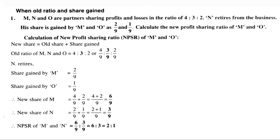The problem: M, N, and O are partners sharing profit and loss in the ratio of 4:3:2. In this problem, N is retiring from the business. When N gets retired, the remaining partners are M and O. M and O have gained shares of 2/9 and 1/9 respectively — this is called the share gained. We need to calculate the new profit sharing ratio (NPSR) of M and O.